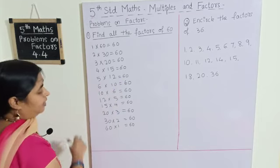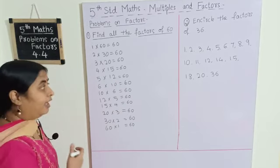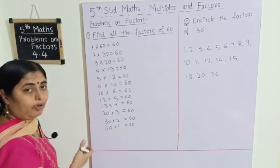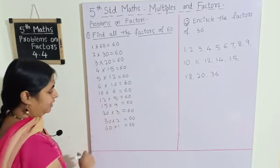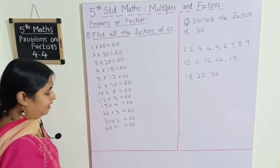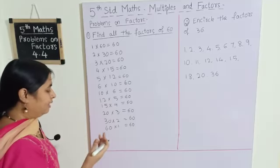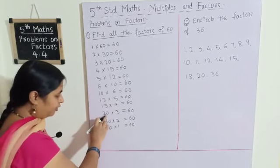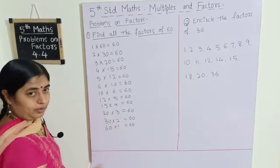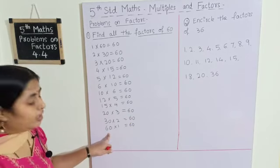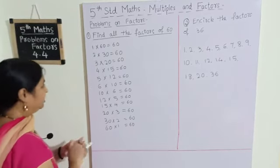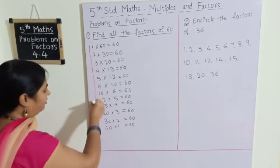In the tables of 7, 8, and 9 we don't find 60. So next, 10 into 6 equals 60. In the table of 11 we don't find it. 12 into 5 equals 60. In the tables of 13 and 14 we don't find 60. 15 into 4 equals 60. In the tables of 16, 17, 18, and 19 we don't find 60. 20 into 3 equals 60. 30 into 2 equals 60. And 60 into 1 equals 60. These are all the factors of 60.